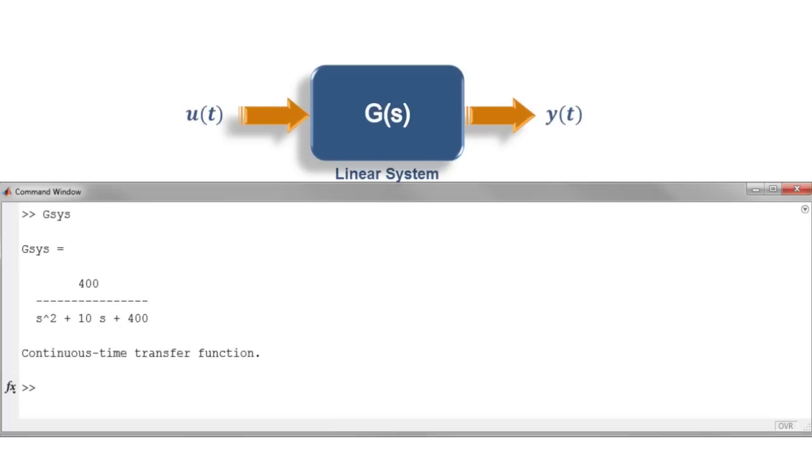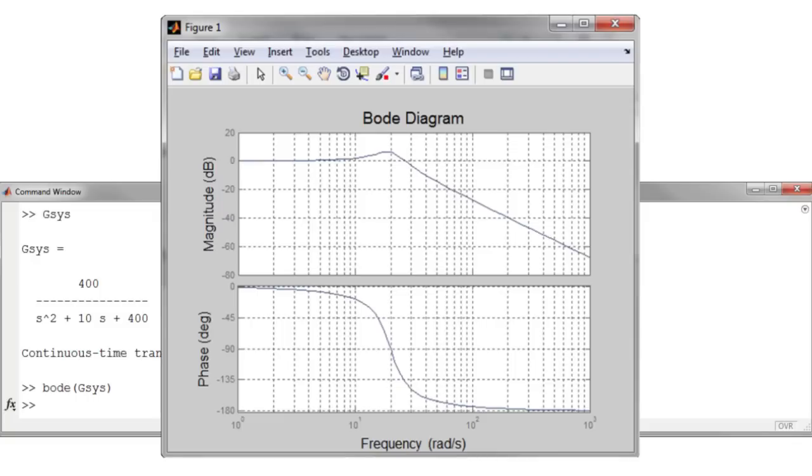we can easily define our transfer functions directly in the s domain and call the desired built-in function to automatically perform these evaluations and create the appropriate frequency diagram, in this case, a Bode plot.